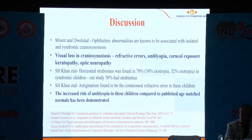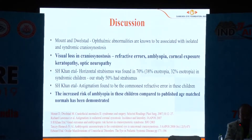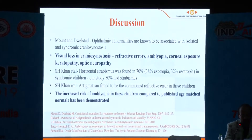According to Korn-Ital, horizontal strabismus is commonly found and astigmatism is the commonest refractive error, which coincides with our study results as well. The increased risk of amblyopia in these children has already been proved.